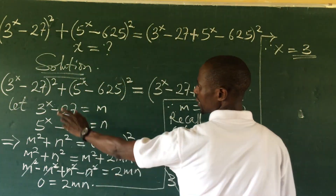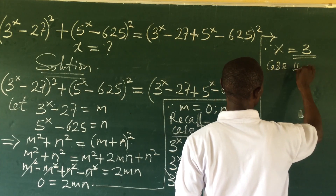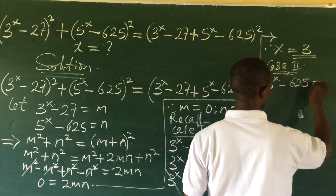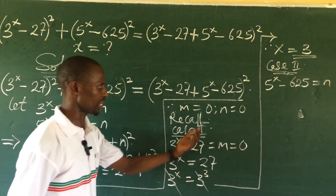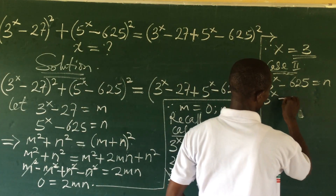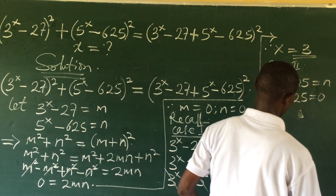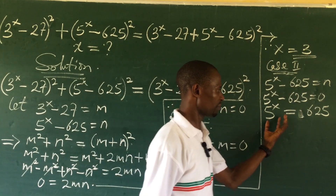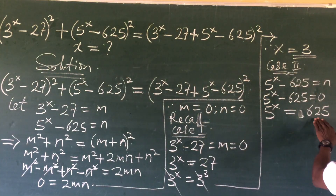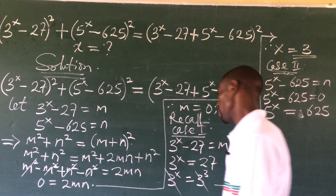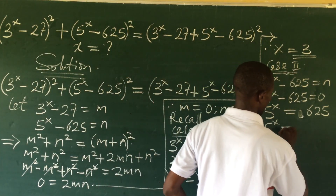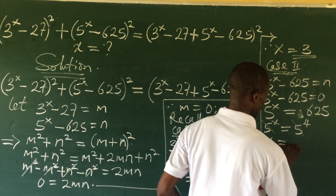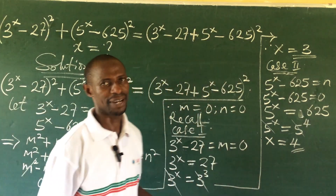Case 2: We have 5^x − 625 = n = 0. Collecting like terms gives 5^x = 625. Expressing 625 in base 5 gives 5⁴, so we rewrite as 5^x = 5⁴. The bases cancel and we equate exponents to get x = 4.